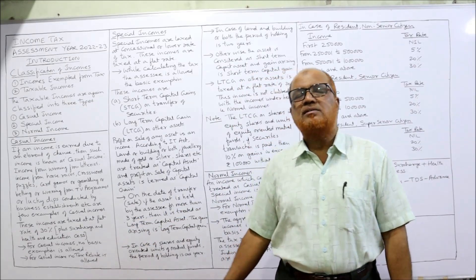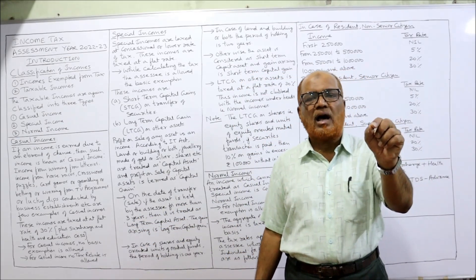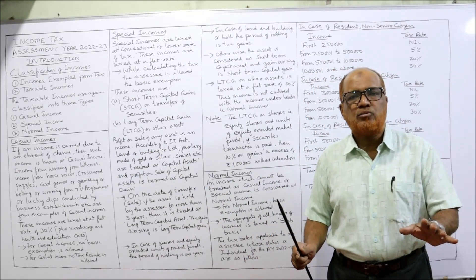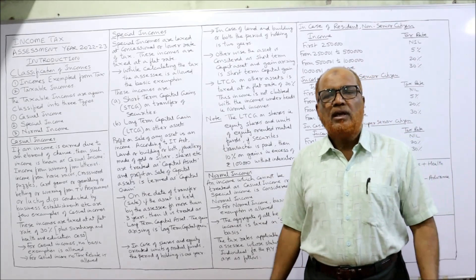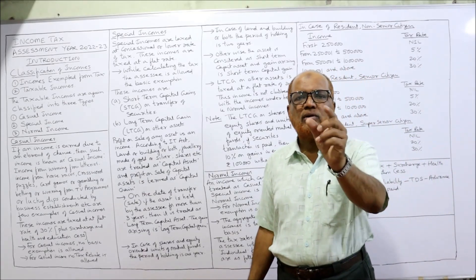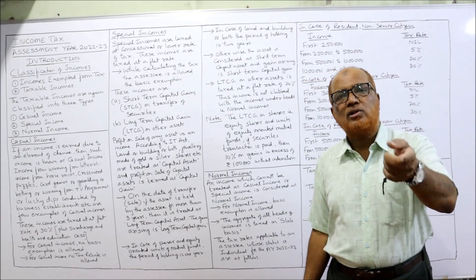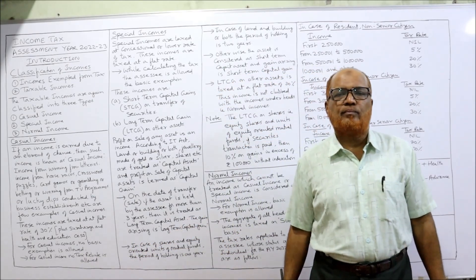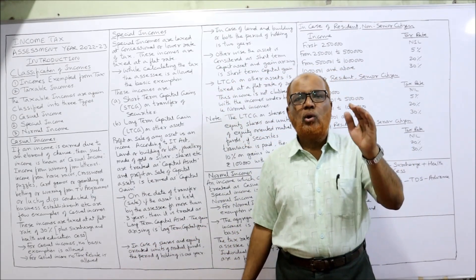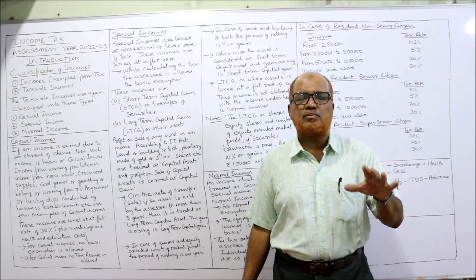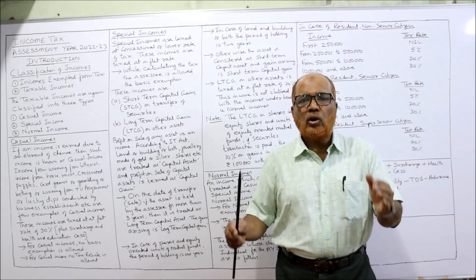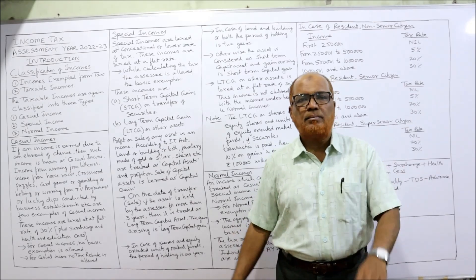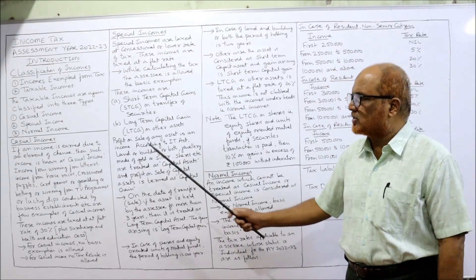For casual incomes, no basic exemption is given. Even if a person wins a small amount of 100 rupees, tax is calculated on that amount. Also, no tax rebate is allowed for casual income. Tax rebate is allowed for lower income groups in normal income, but not for casual income.